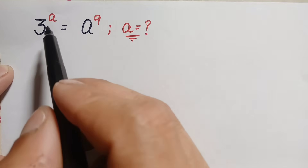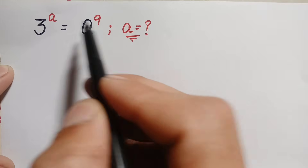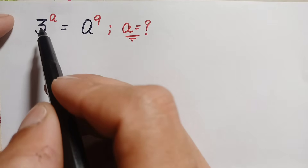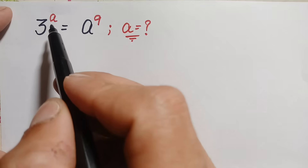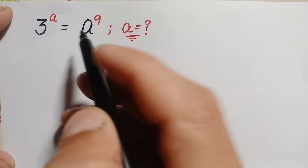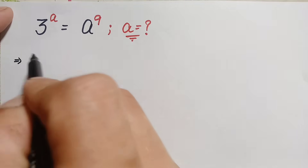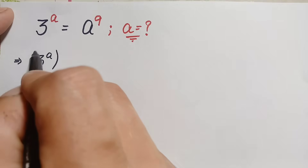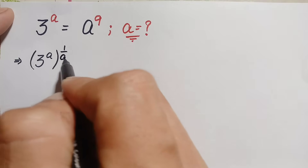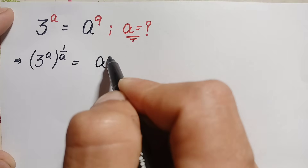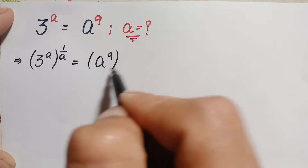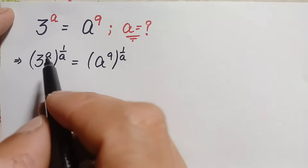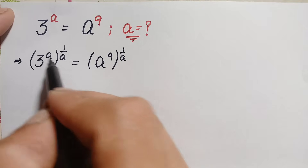First, we will try to eliminate the powers a and 9. To eliminate a from the left hand side, we will raise both sides to the power of 1/a. So we take 1/a as the power on both sides: (3 × 2^a)^(1/a) is equal to (8 × 2^9)^(1/a).